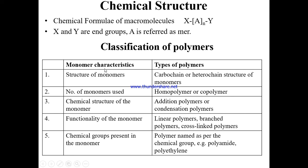One classification is based on the structure of monomers — carbocyclic or heterocyclic. When only carbon atoms are present in the monomer chain, they are called carbocyclic monomers. If carbon and other heteroatoms such as oxygen or nitrogen are present, they are called heterochain monomers.